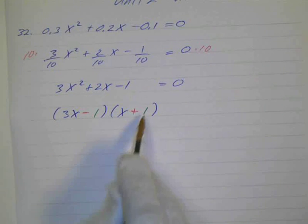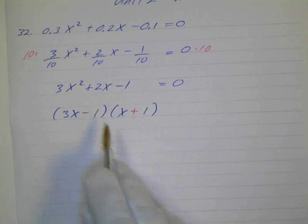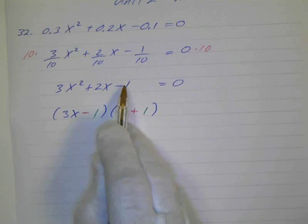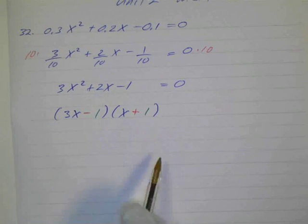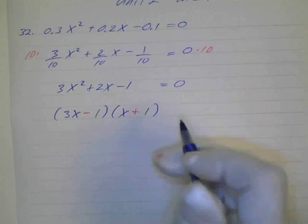So we get 3x minus 1x is 2x, so that works. Negative 1 times positive 1 is negative 1, and 3x times x is x squared, so that works. And that's equal to 0.